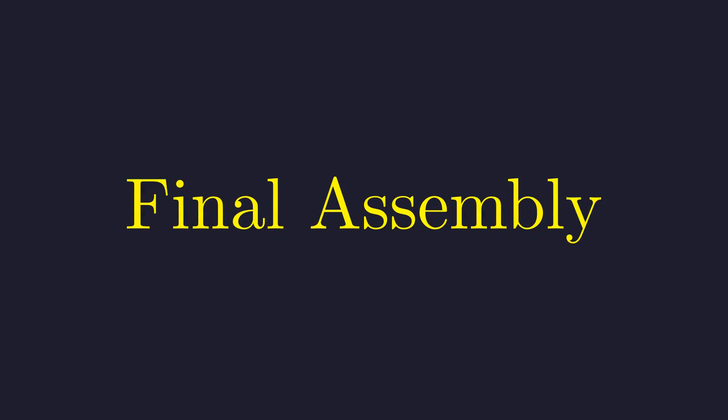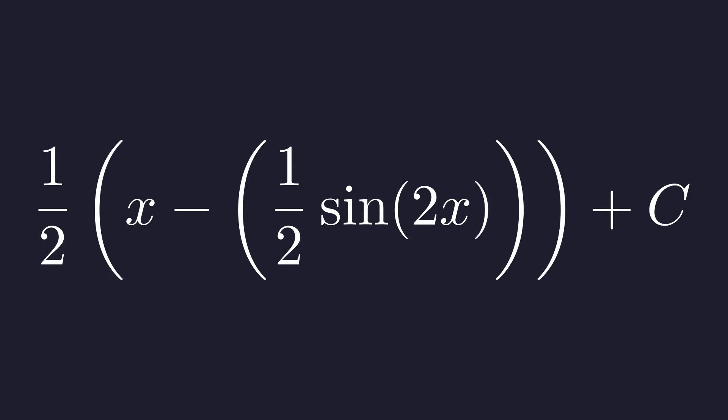Now we have all the pieces. Let's put together the final answer. We substitute our result for the integral of cosine of 2x back into the main expression. And don't forget the constant of integration, c.